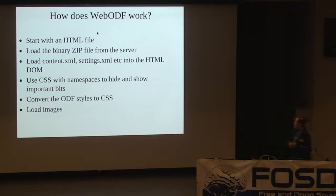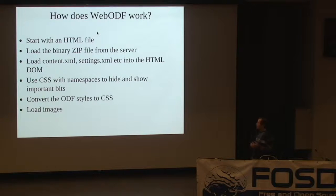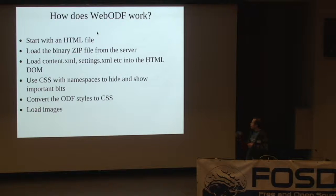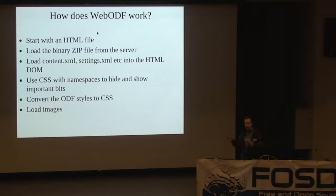So how does WebODF work? You start with an HTML file, figure out the path to the zip file, and start loading it. The loading is done with an XMLHttpRequest which gets the binary data — but not the whole file at once. If you have a file with large images it won't get them all at once. It first gets the index of the zip file, then gets the important parts: the content XML, the settings XML, and the styles XML. Then it puts that information into the DOM tree which forms your HTML document.